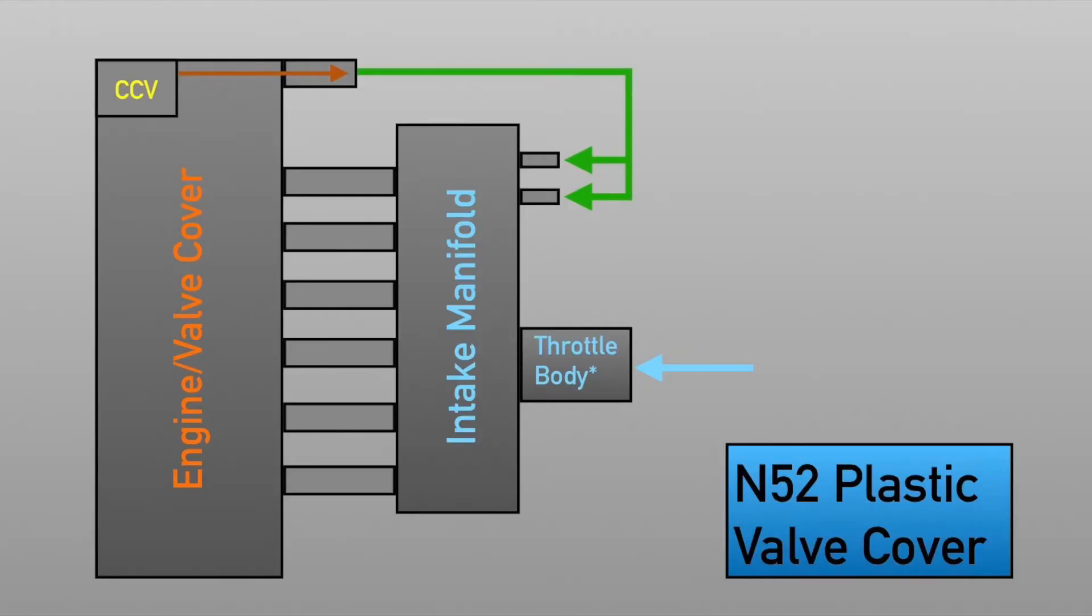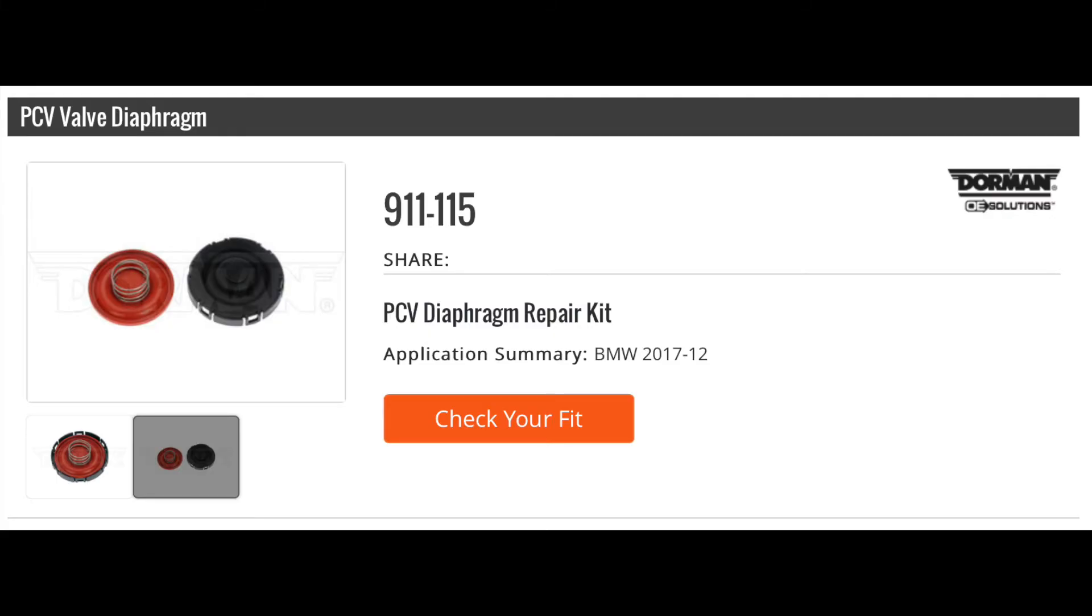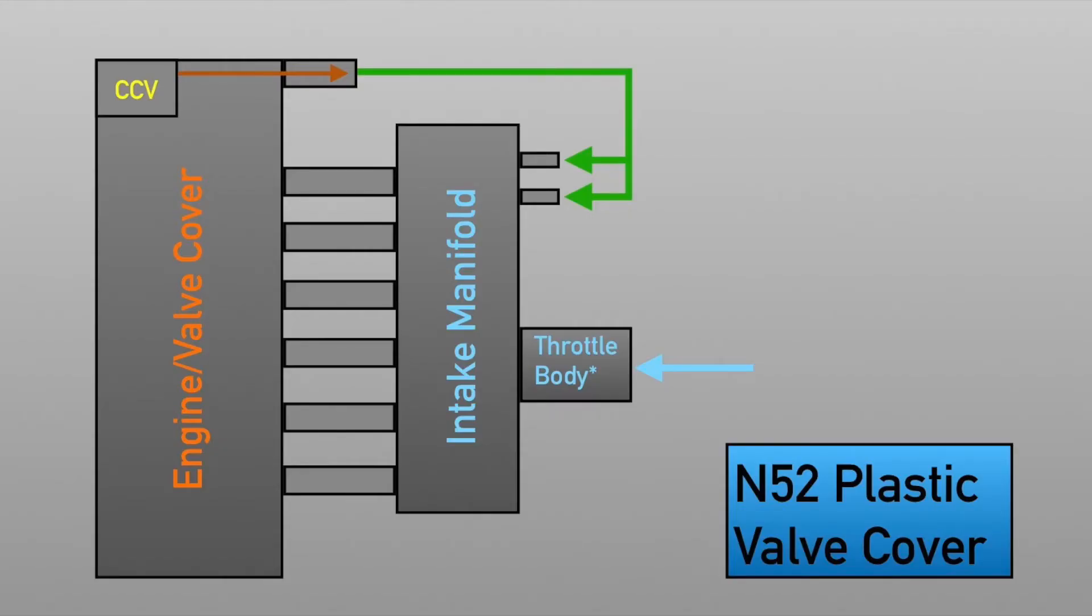First, on the N52 plastic valve cover, the CCV is integrated into the valve cover, which is what makes it a worse design in some ways, because when that CCV system fails, you have to replace the entire valve cover. There are ways to just replace the CCV diaphragm for less money, but that requires hacking up the plastic, and it's really not the best way to do it. It is really best to get a new valve cover.